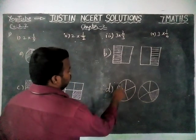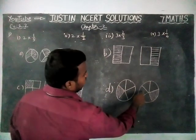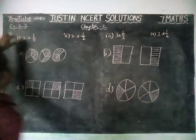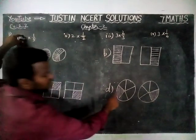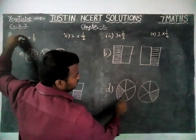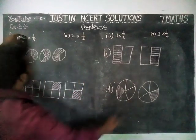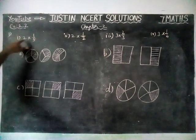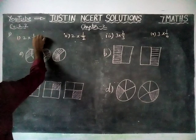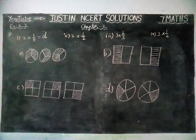Option D: 1 divided by 5, and here we have 2 pictures. So this answer is correct. 1 divided by 5 and this is also 1 divided by 5 — we need 2 pictures. So 2 into 1 by 5. Option D is the correct answer.